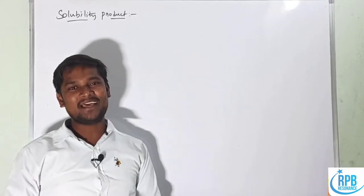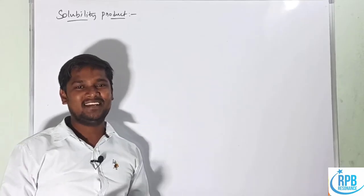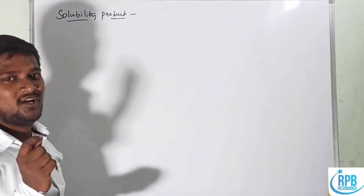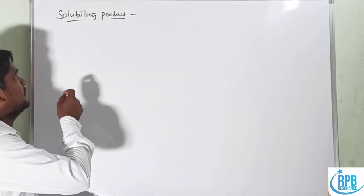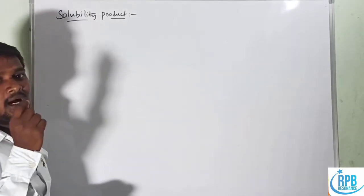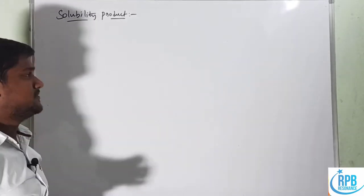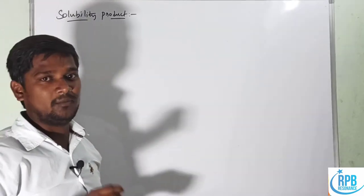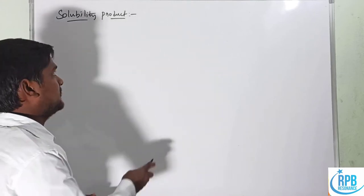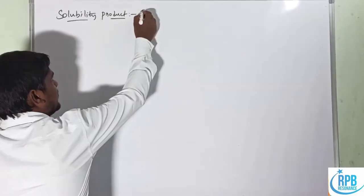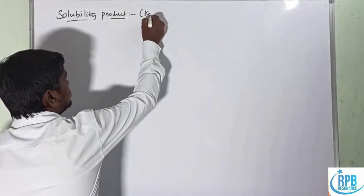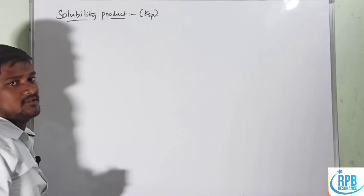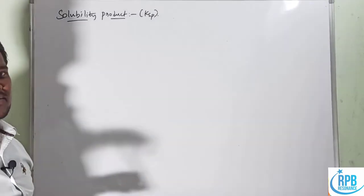Hi everyone, welcome to RP Resonance Chemistry. Now let us continue our lectures on electrochemistry. Today we are going to deal with one of the applications of EMF, that is the solubility product, simply denoted as Ksp. This is the solubility product representation.